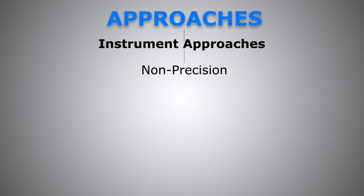Examples of non-precision approaches: NDB, non-directional beacon — provides us only with lateral guidance. We have VOR, Very High Frequency Omnidirectional Range — also a nav aid that provides only lateral guidance. We also have localizer, which is a component of the ILS. For example, if the glide slope is inoperative, or some airports only have the localizer component, the localizer provides lateral guidance only — so it is a non-precision approach.